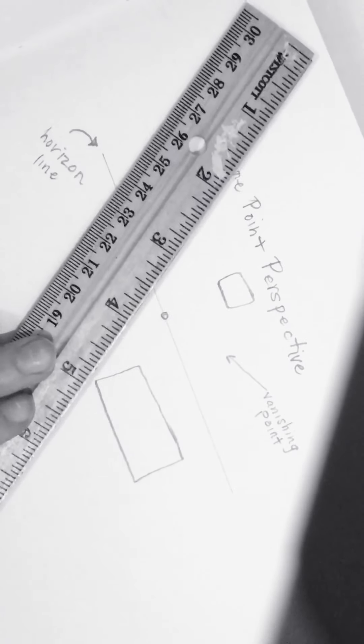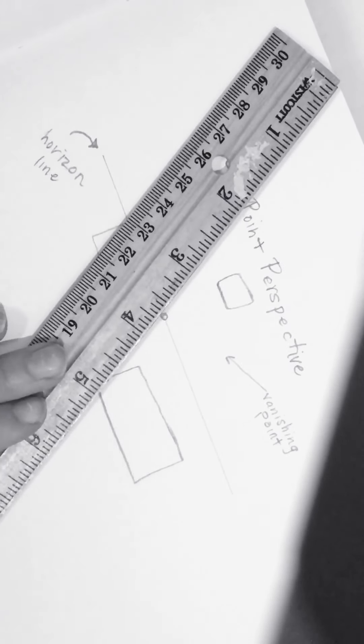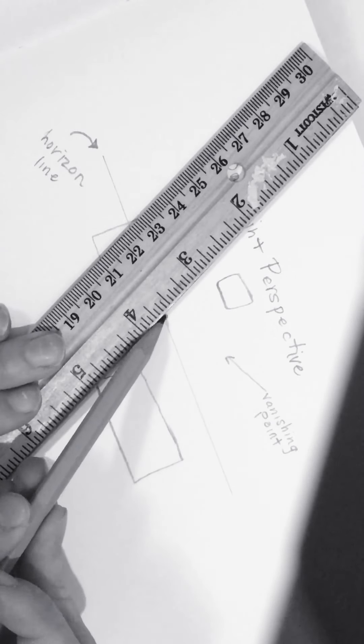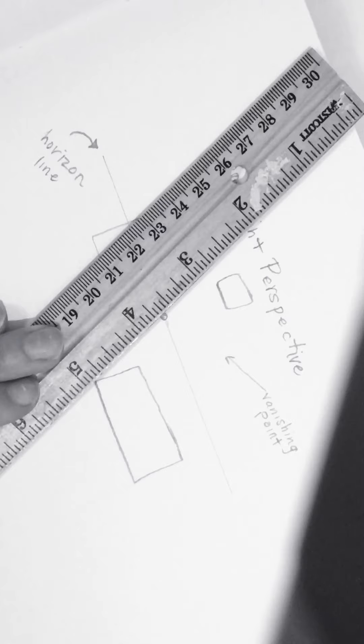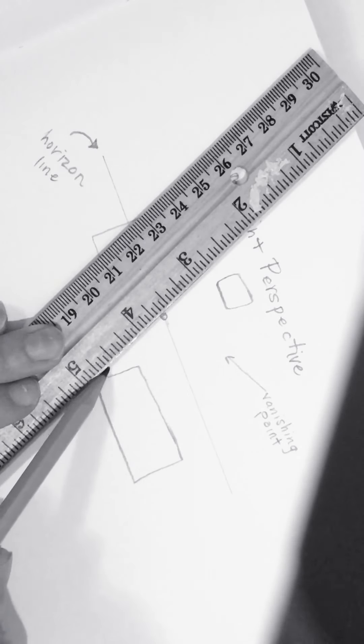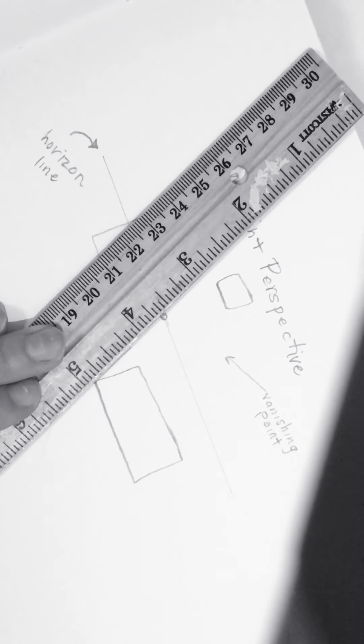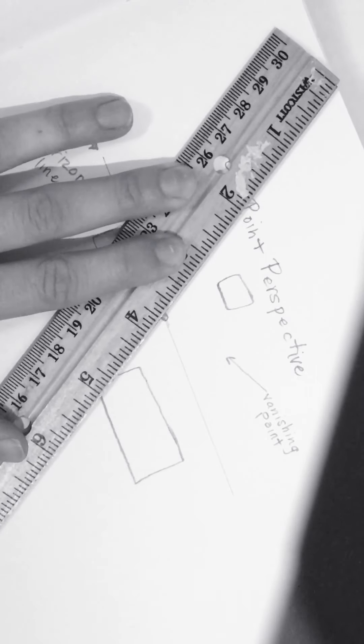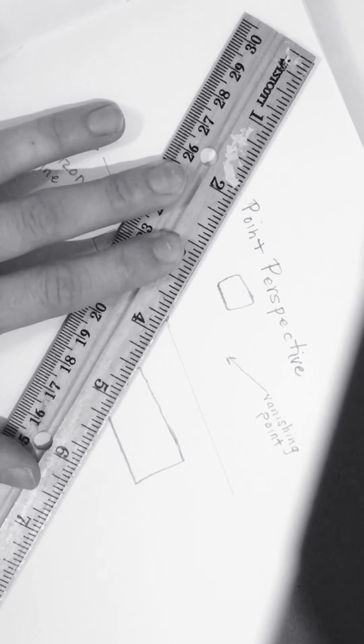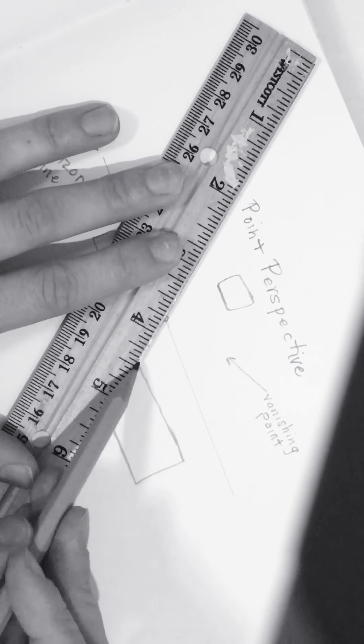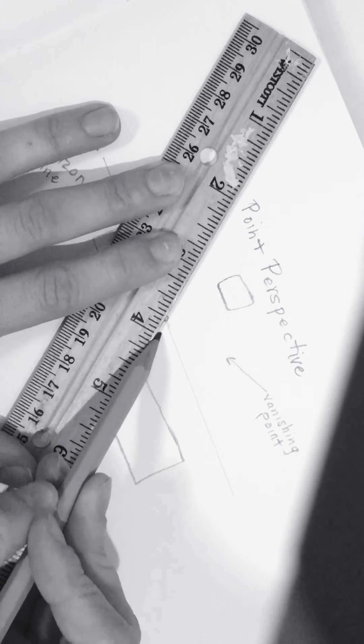So what I'm going to first do, I'll start with my bottom box. I want to line my ruler up so it's touching the vanishing point. I'm going to line it up to this edge here and go as far as I want. Keeping my ruler touching the vanishing point, I'm going to scoot it on over to the next corner of my box and draw a line.